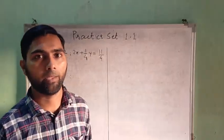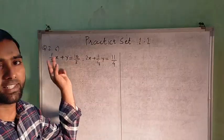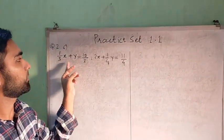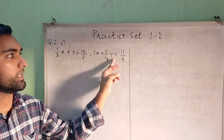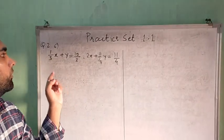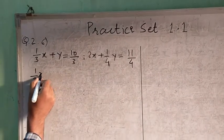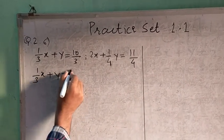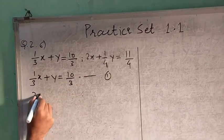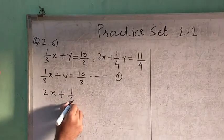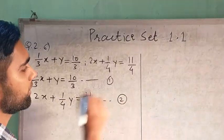Assalamu alaikum warahmatullahi wabarakatuh. Today we learn about Practice Aid 1.1, Question number 2.6. The equations are: 1 upon 3x plus y is equal to 10 upon 3 — this is equation number 1 — and 2x plus 1 upon 4y is equal to 11 upon 4 — this is equation number 2.